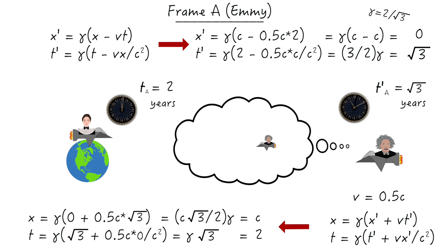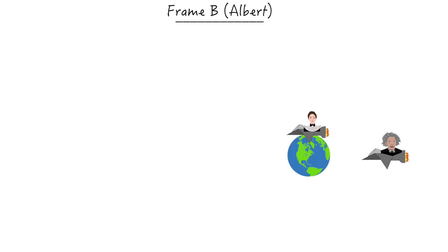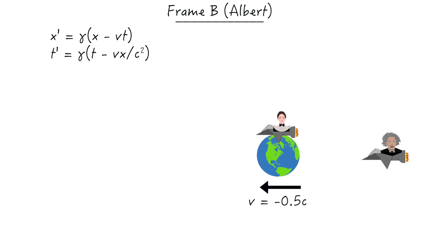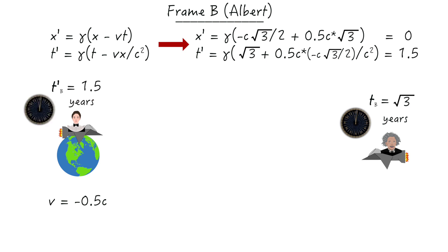However, what if he wants to calculate what her coordinates should read in his frame? Well, for him, she's the one in motion, so he can use the exact same forward transformation that she used, but just with slightly different initial conditions, namely that her velocity is negative one-half the speed of light. Thus, using the forward transformations, he'll see her blast away at half the speed of light, and after the square root of three years, he sees that she turns around. After doing the Lorentz calculations, he'll get that her space coordinate corresponding to the turnaround point reads zero, and that her time coordinate reads one and a half years.